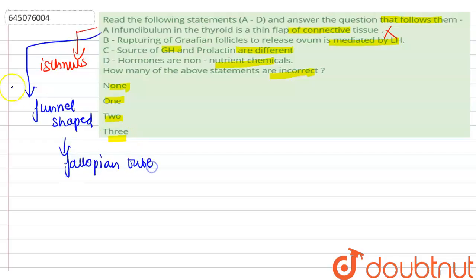So this statement is incorrect. Now the rupturing of Graafian follicles to release ovum is mediated by luteinizing hormone. This is the correct statement, as the luteinizing hormone LH is produced by the pituitary gland in the brain and it stimulates the ovaries to produce estrogen and progesterone, and the LH surge, the increase in the level of